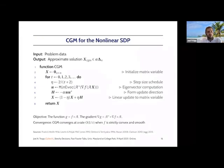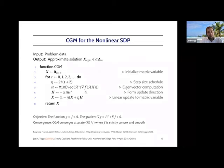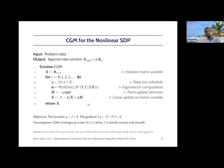Here's pseudocode for conditional gradient. We start out with the matrix 0. At each step, we compute the gradient of the objective, compute the minimum eigenvector of this matrix, form an update direction which is minus alpha times the outer product of this eigenvector with itself, and average that update direction into the matrix X to obtain our new iterate. You can show that conditional gradient converges at a rate of 1 over T, where T is the number of iterations, if F is a nice smooth function. A very simple, beautiful algorithm.